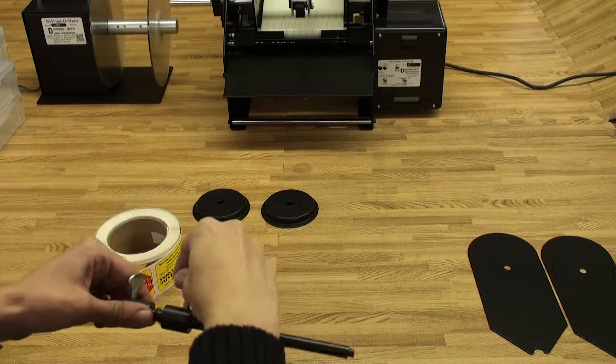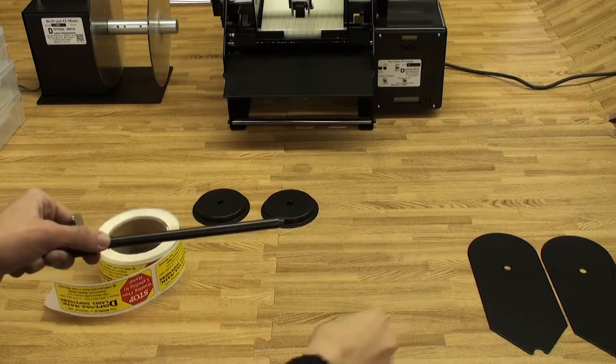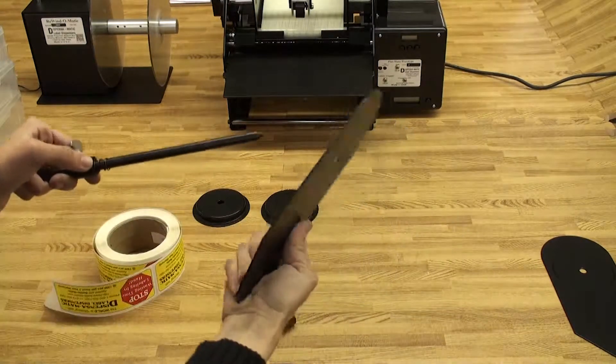Now we're going to load the roll of labels onto the roll holder rod. Remove the one inch collar with thumb screw and then put the roll guide onto the roll holder rod.